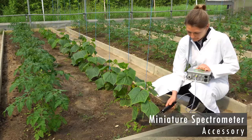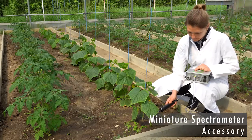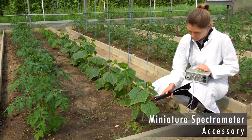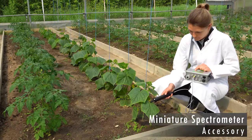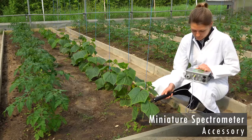The miniature spectrometer precisely examines gradients of intensity and spectral composition of light. Both are key factors for plant growth.